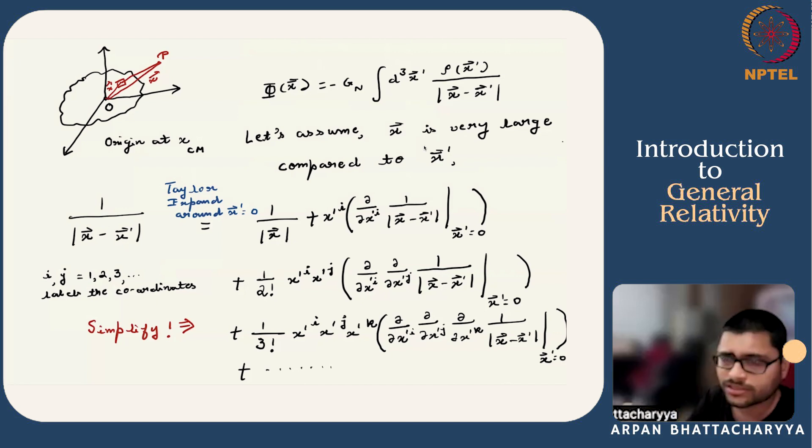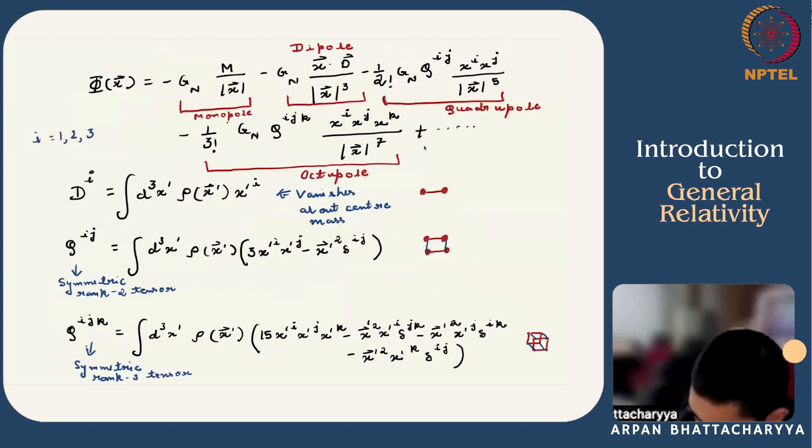If you do that order by order you get this. Please do this exercise by yourself to get familiarized with this calculation. It is fairly simple and you can simplify this by taking the derivative. The i, j indices label the coordinates. Remember that we are working in three dimensions, so there are three coordinates. i, j is 1, 2, 3. You can think about x, y, z coordinates, and repeated indices here mean summed over. After you simplify this expression, we can plug this inside Φ and you get some terms order by order.